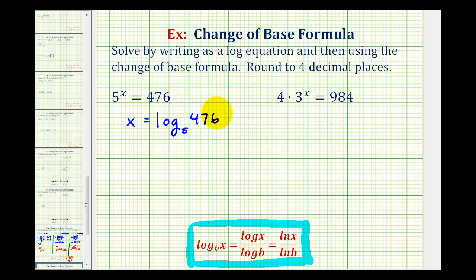Now the directions are telling us to evaluate this log using the change of base formula. Let's use natural log, so x is going to be equal to natural log of 476 divided by natural log of 5.